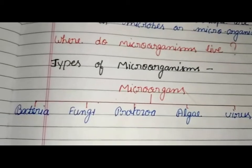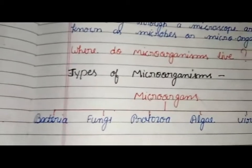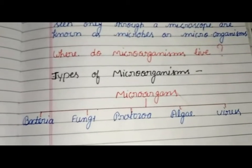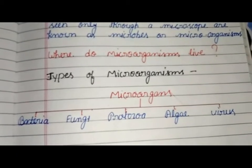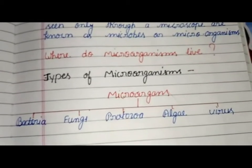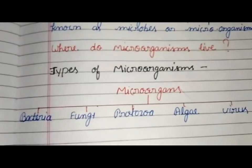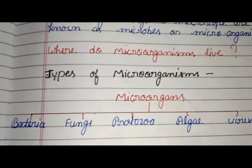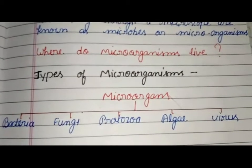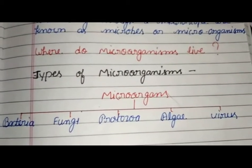Types of Microorganisms. Microorganisms can be classified into five major groups: first is bacteria, second fungi, third protozoa, fourth algae, and last, virus.